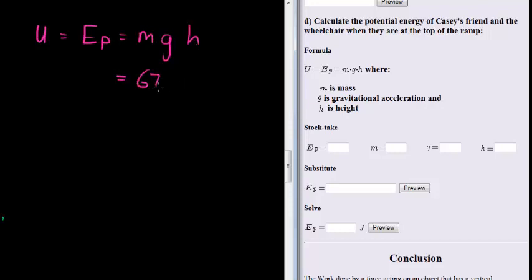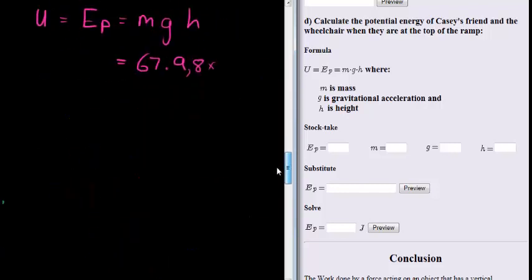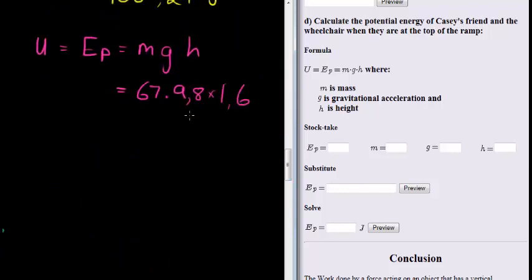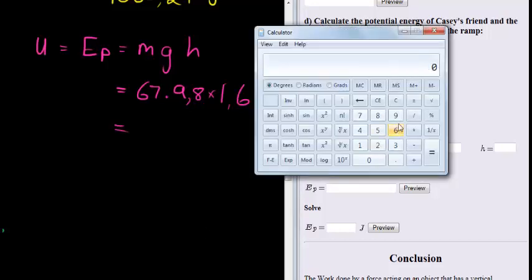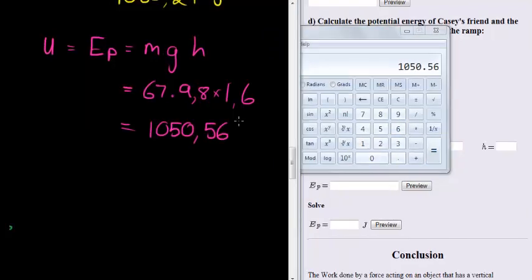We've done mass, 67. We know gravity is 9.8, and we know that the height in the end is this 1.6. That's the height they have in the end. So potential energy is equal to 67 times 9.8 times 1.6 equals 1050.56. And it might be interesting for you to know that this is also in joules. Energy is also measured in joules.